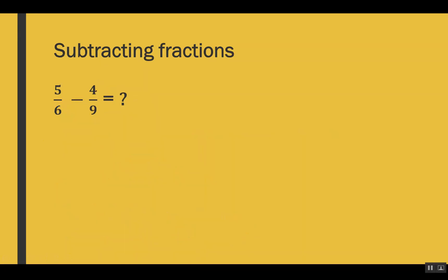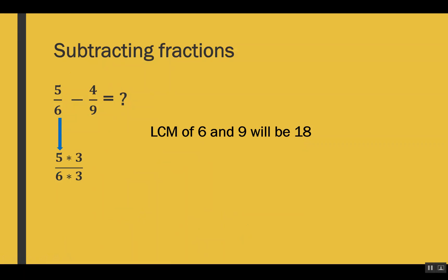Now let's see the case of subtracting fractions. Again we have different denominators, and the rule is the same — we take the LCM and make the denominators equal before doing the operation. The LCM of 6 and 9 is 18. To make 6 into 18, we multiply by 3, so we multiply 5 by 3 and 6 by 3.